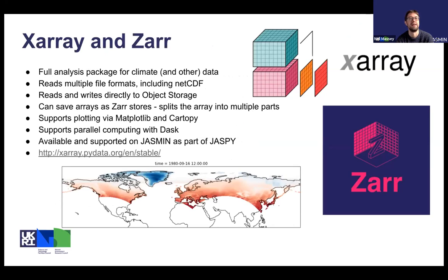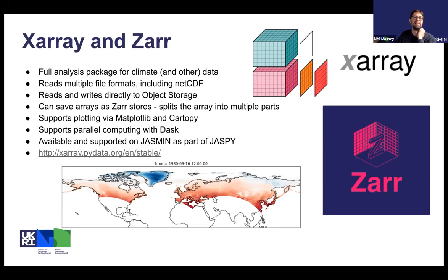XArray and Zarr is a full analysis package, similar to Iris and CF Python, for climate and other data like time series. It can read multiple file formats including NetCDF, and it can read and write directly to object storage via an interface to Zarr — saving arrays as Zarr stores, which splits the array into multiple chunks. XArray and Zarr has plotting built in via Matplotlib and Cartopy. It supports parallel computing with Dask, where an analysis on an array is split into multiple parts and distributed, with Dask as the middleware. This is available on Jasmine as part of Jaspy.